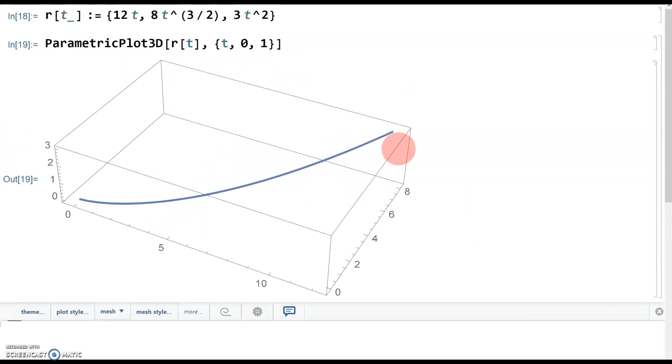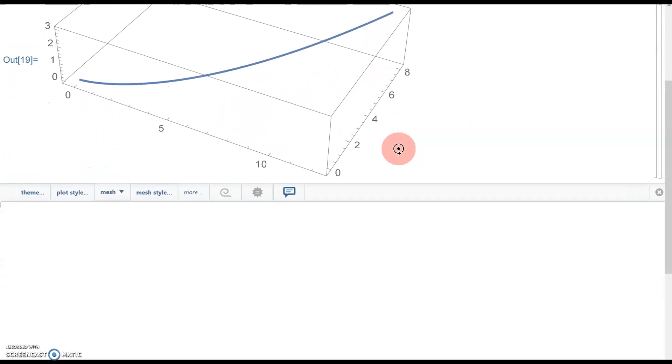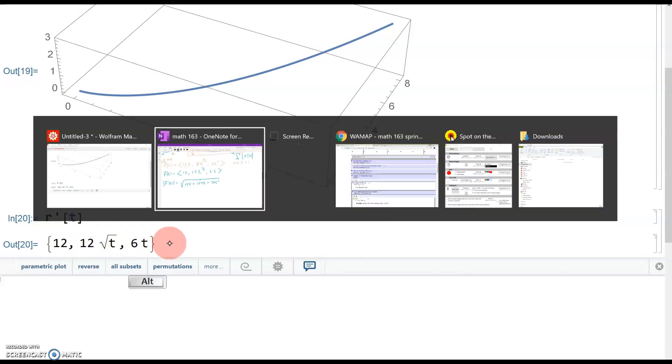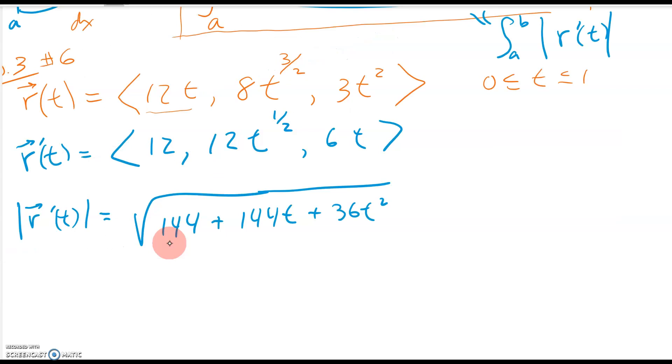Okay. So now, step one is get your derivative. All right. So to do derivatives, you just do the apostrophe. So that would be r prime and then t and there it is, 12 times 12 to the one half power in 6t. If you remember, that was the same that we did by hand, 12, 12 times square root of t, 6t.